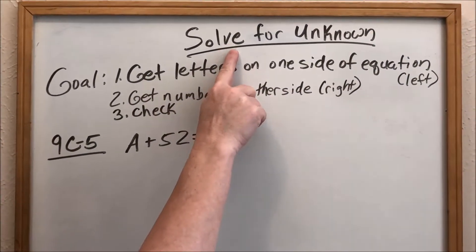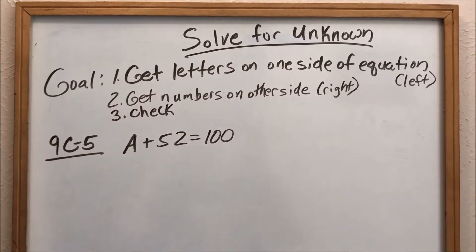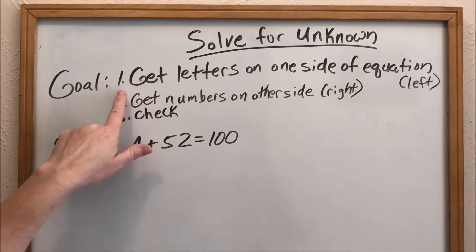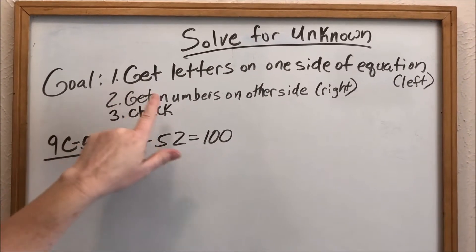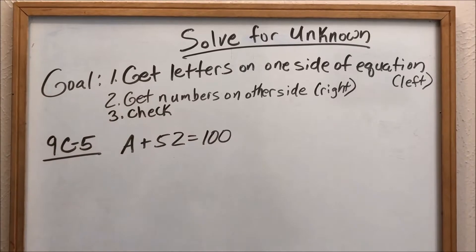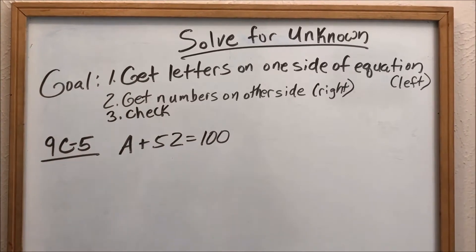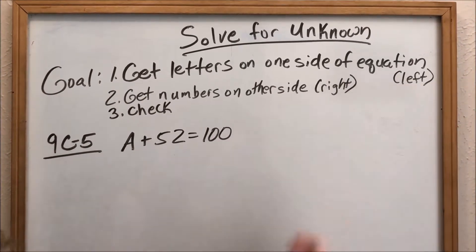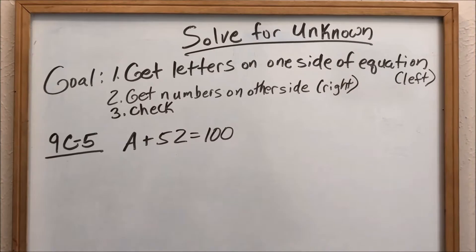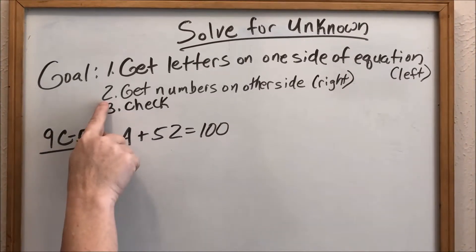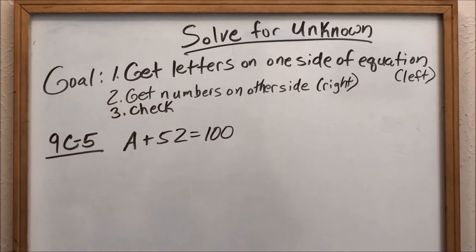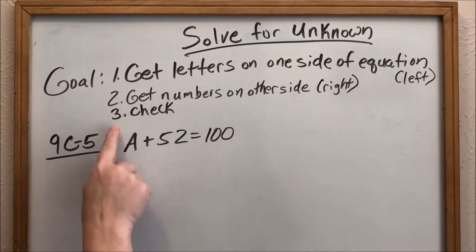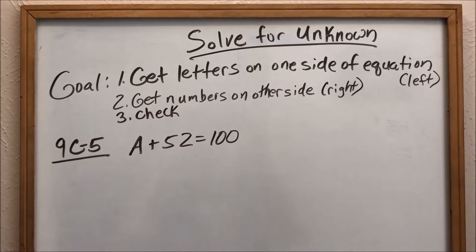Today we're going to be solving for the unknown. Here is our goal. Number one goal: get letters on one side of the equation. Usually we put letters on the left, but it doesn't have to be on the left. Number two goal is to get numbers on the other side. And then the third step is we're going to check.